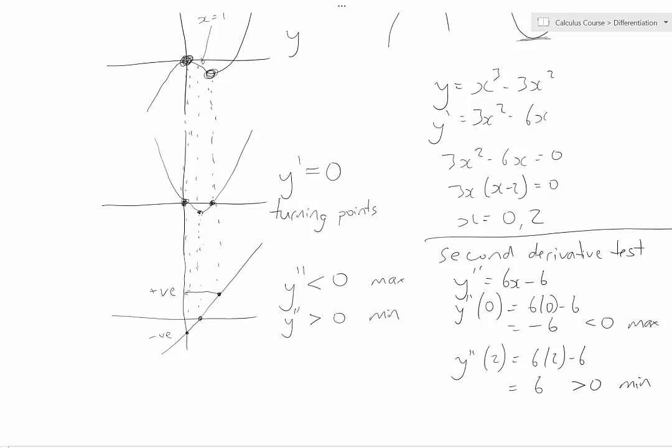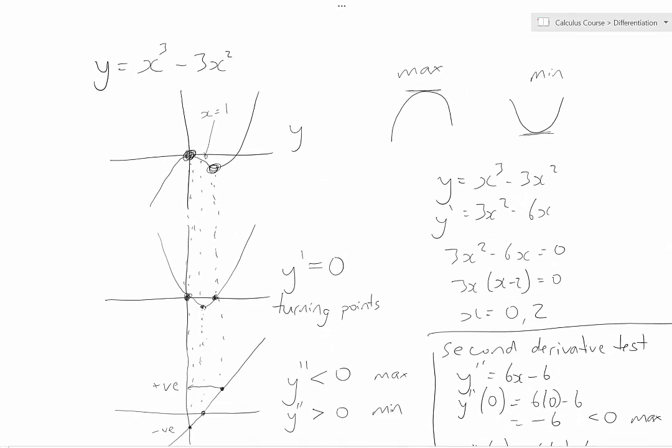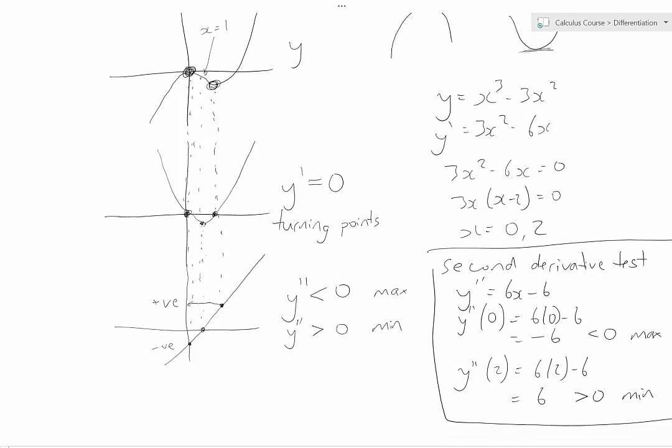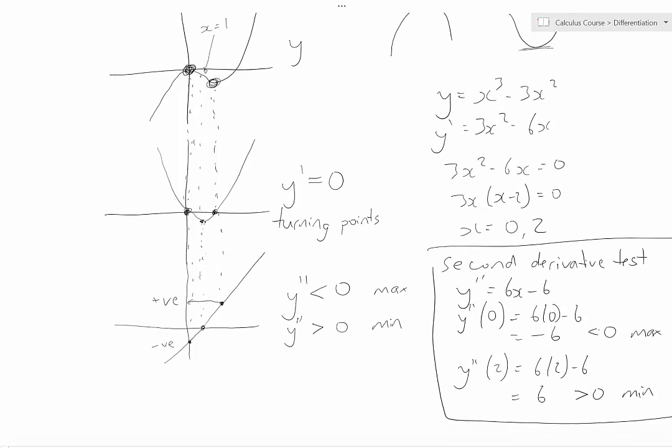So this is what we call the second derivative test. And effectively what you're doing is you need to differentiate the original function twice, and then substitute in the x-coordinates of those turning points. And if you get a result that is less than zero, the turning point must be a maximum. If it is greater than zero, it must be a minimum. And in the next video, we'll look at what happens if the second derivative test equals zero.